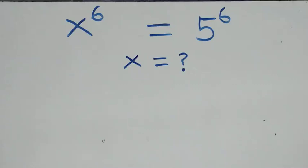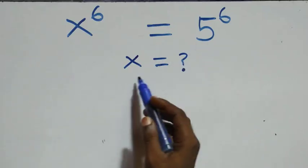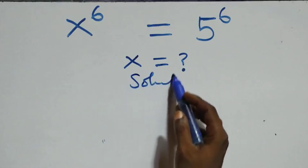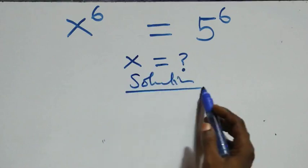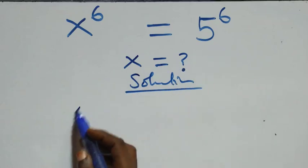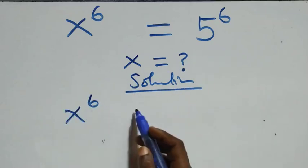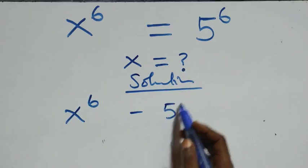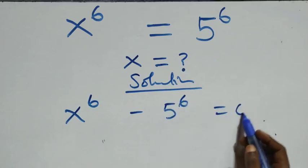How to solve this nice exponential equation? Now what we have here, we take 5 raised to power 6 to the left hand side and we have x raised to power 6 minus 5 raised to power 6 equals to 0.